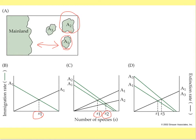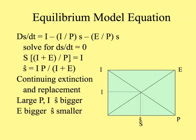When we compare A1 and A3, A3 is the same size as A1 but it's closer. Because it's closer, it will have a higher immigration rate and the same extinction rate because they're the same size. For that reason, it will also have a greater number of species than island A1. The equilibrium model equation takes into account the size of the species pool available, and assuming continuing extinction and replacement with a larger species pool and immigration rate, the equilibrium number of species is bigger. If the extinction rate is larger, the equilibrium number of species is smaller.